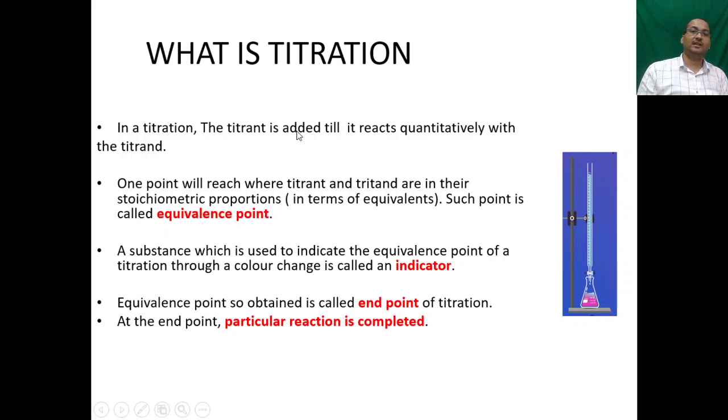In a titration, the titrant is added till it reacts quantitatively with the titrand. One point will reach where titrant and titrand are in their stoichiometric proportions in terms of equivalence. Such point is called equivalence point. The substance which is used to indicate the equivalence point of a titration through a color change is called an indicator. Here you can see at equivalence point a nice pink color, light pink color. Equivalence point so obtained is called the end point of the titration. At the end point, a particular reaction is completed.